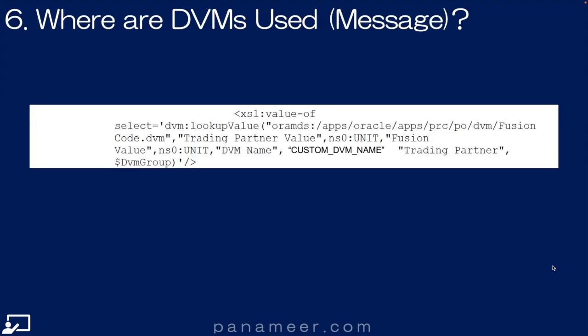Then where are the DVMs used in the message? This is an example of some custom code that was created around the message coming back for an invoice. This, along with that supplier invocation that says to go use this DVM, tells it to use this message to take the value and translate it.